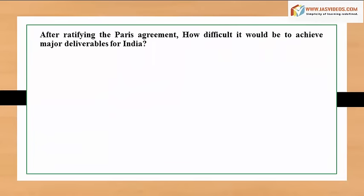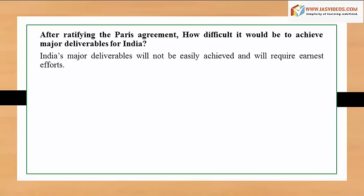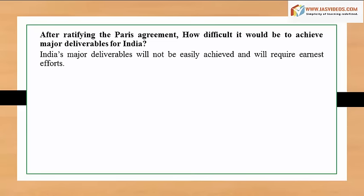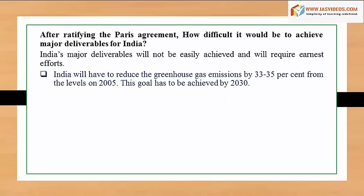After ratifying the Paris Agreement, achieving major deliverables for India will not be easy and will require earnest efforts. India will have to reduce its greenhouse gas emissions by 33 to 35 percent from 2005 levels, and this goal must be achieved by 2030.